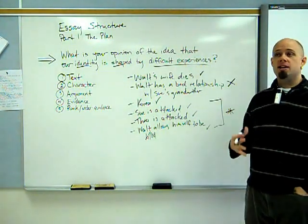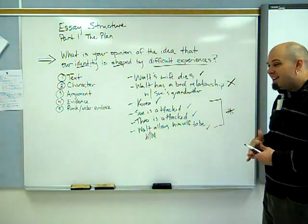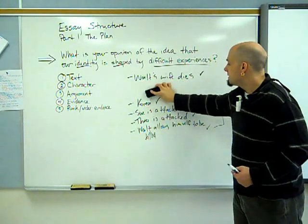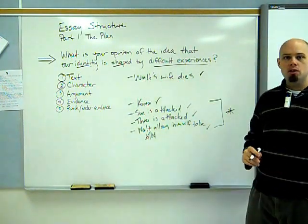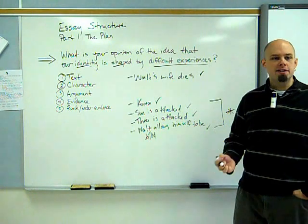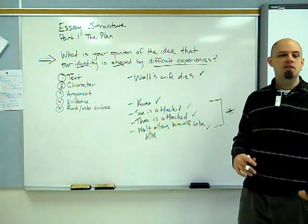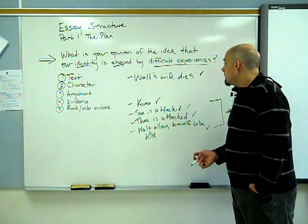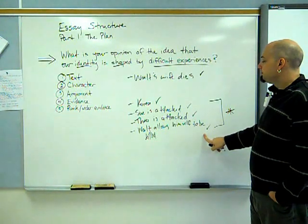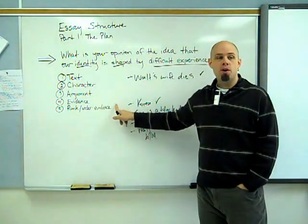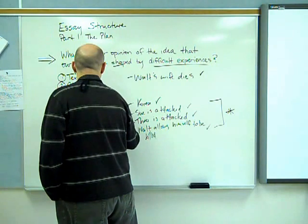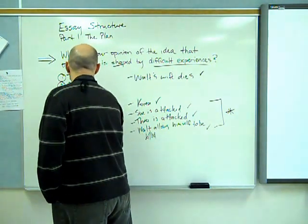This one here though, Walt has a bad relationship with Sue's grandmother, I don't know if I would consider that to be a really difficult experience beyond him being really annoyed with her. His identity is shaped. At the end of the film, he gives his dog to her. But I would say that this is probably not a strong piece of argument. What we've done is we've come up with a list of evidence. We've decided which of these is the best, which is the worst. In this case, we take this one out. And this is what you should be doing too when you're planning your essays. Write down everything. And if you need to take things out in order to make sure that your essay is strong, then do that. It's better to have four pieces of awesome evidence than six pieces of evidence where some are great and some are not.